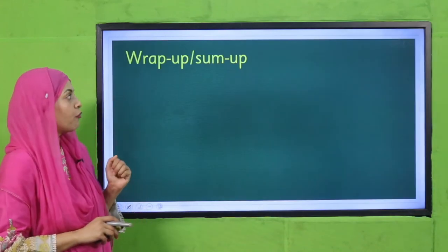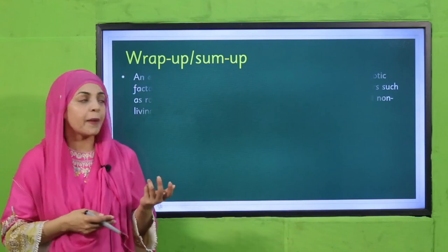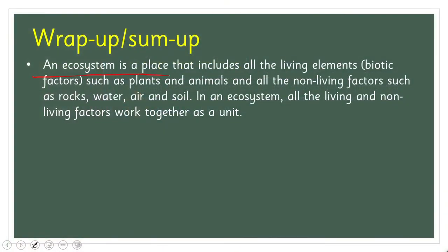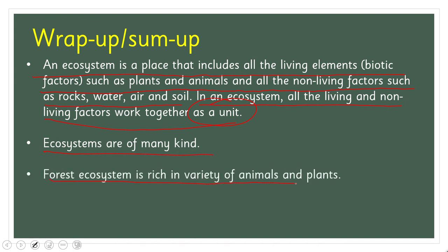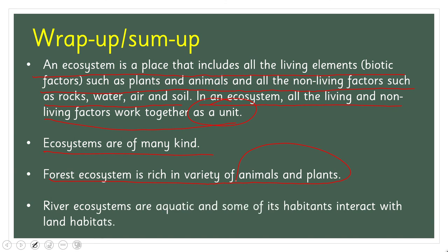Today we have learnt that an ecosystem is a place that includes all living elements (biotic factors such as plants and animals) and all non-living factors (such as rocks, water, air, and soil). All living and non-living factors work together to make up an ecosystem. Ecosystems are of many kinds: a forest ecosystem is rich in variety of animals and plants; a river ecosystem is aquatic and some of its inhabitants interact with land habitats.